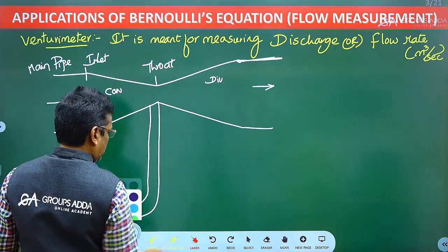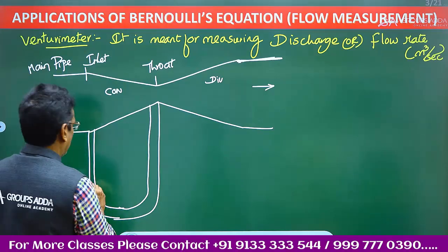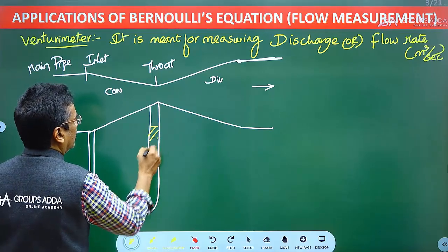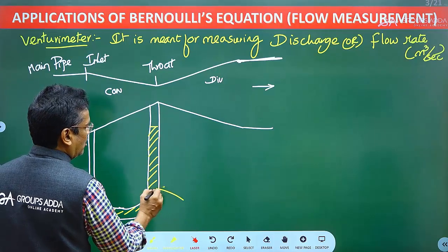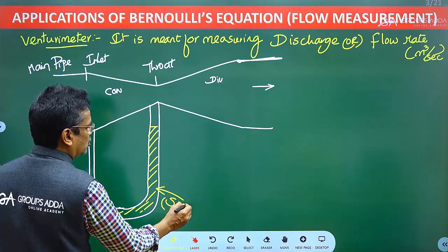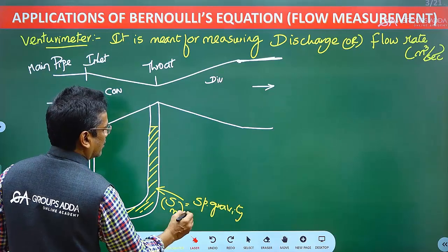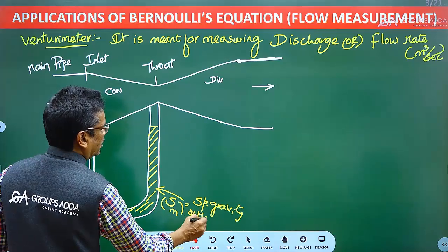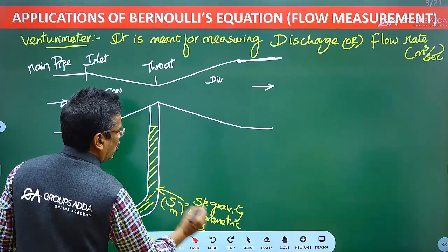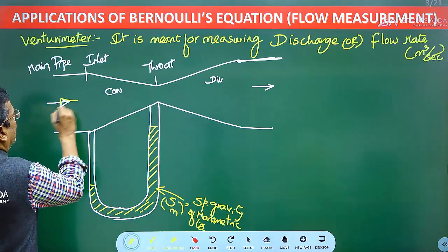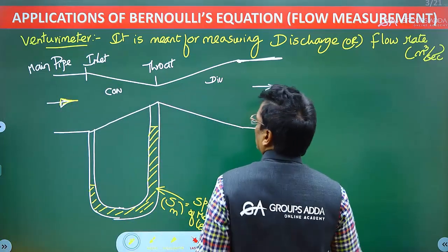Between the throat and the inlet section, we connect a tube manometer. In the tube manometer, there is a manometric liquid. The specific gravity of the manometric liquid — mostly mercury — is different from the flowing fluid inside the pipe, which is typically water. This is the constructional feature of the Venturi meter.